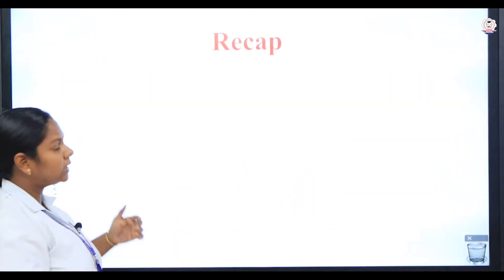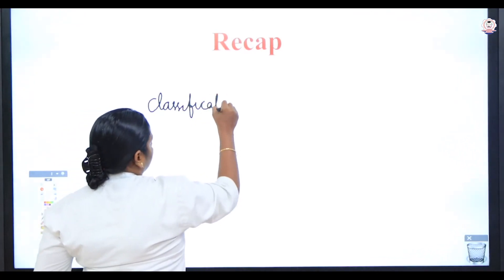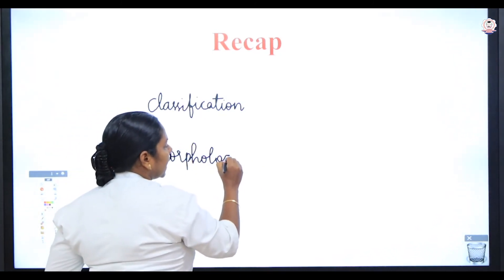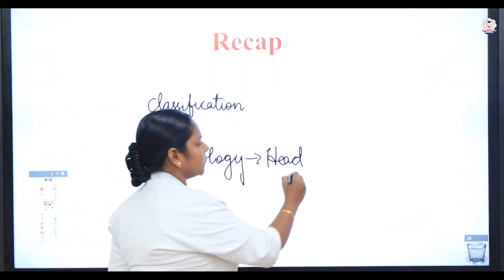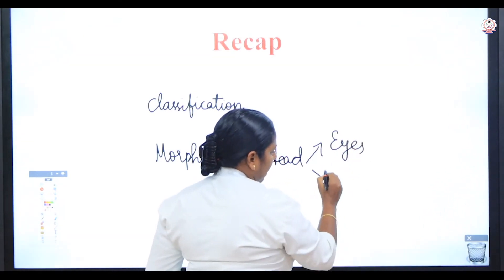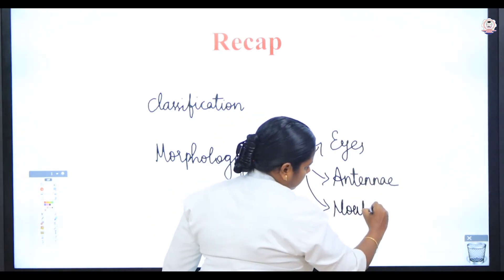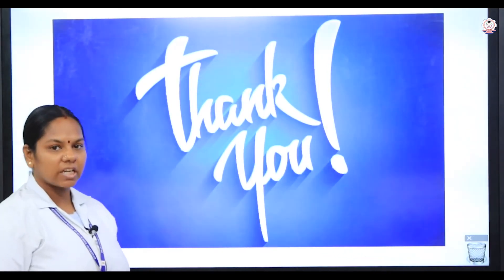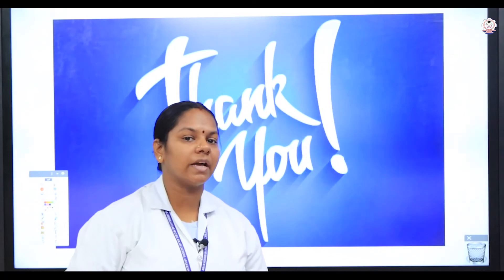Let us recap what we discussed: first, the classification of the cockroach; then in the morphology — the external structure — we discussed about the head, the general characteristics of the cockroach, and the three important parts of the head: eyes, antennae, and mouth parts. With this the session comes to an end. In the next session we shall see about the thorax and abdomen of the cockroach. Study material, assessment, and question bank are attached in the description. Thank you children, have a nice day.